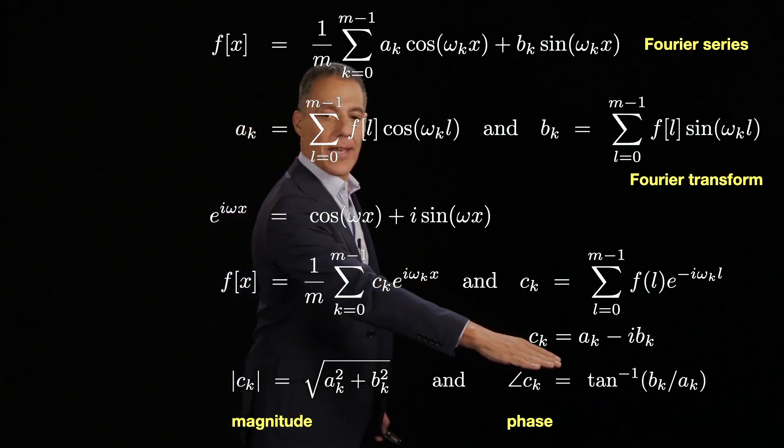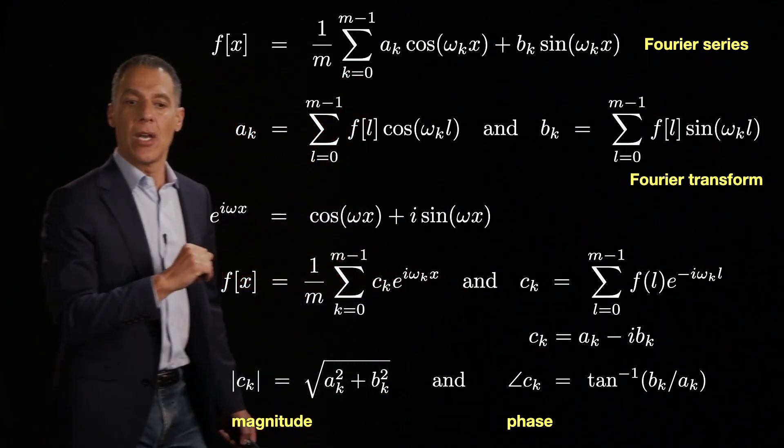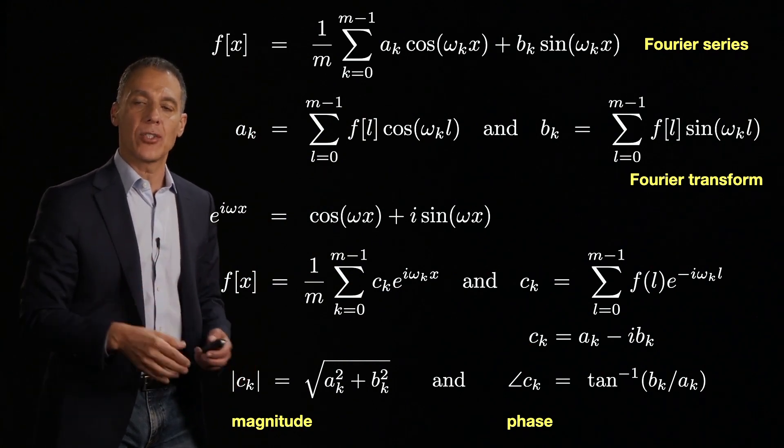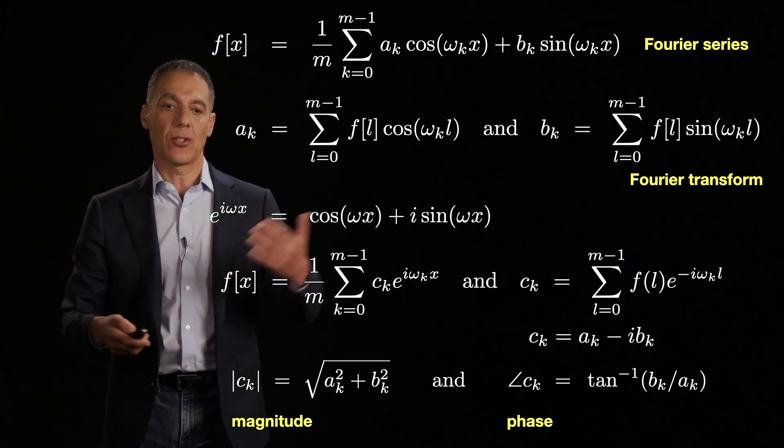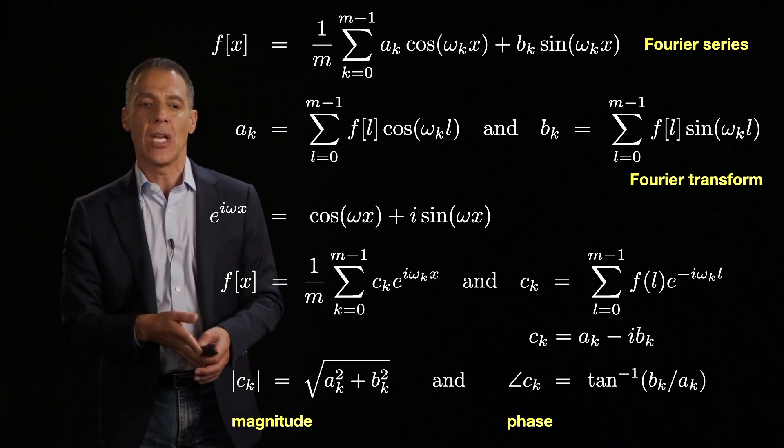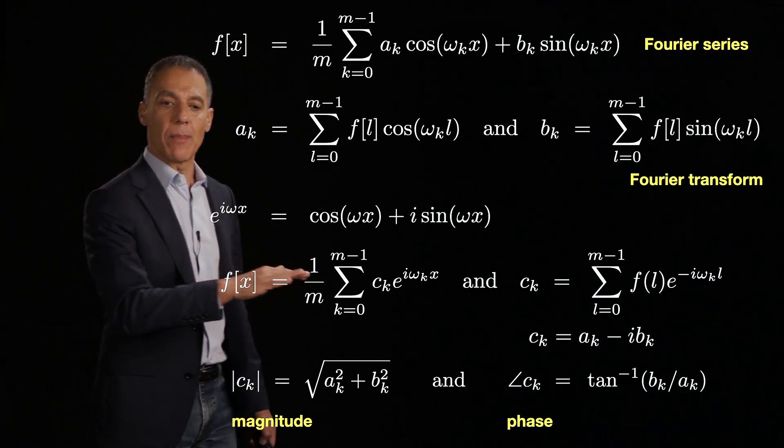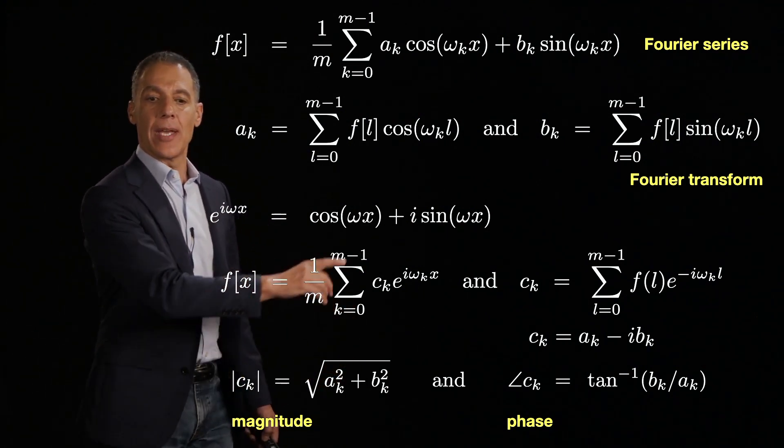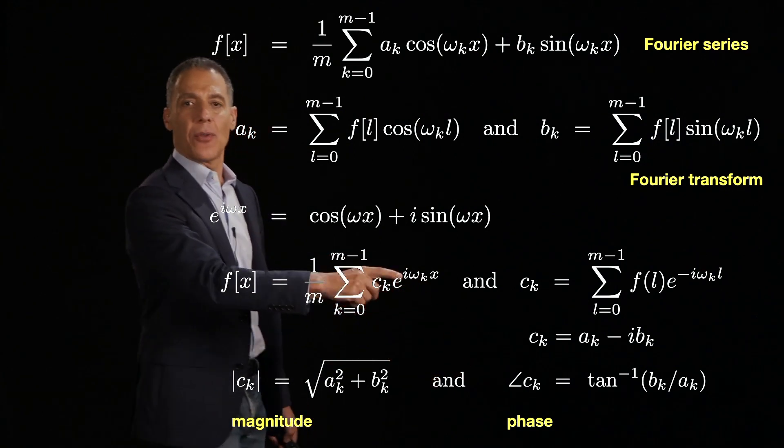Since this is a complex valued quantity, we can think about it in a couple of ways. We can think about it in terms of the real and the imaginary. That would tell us what the cosine and the sine term is.